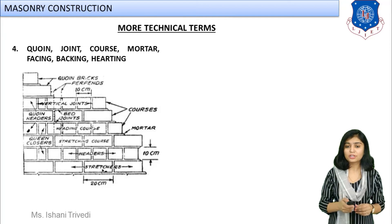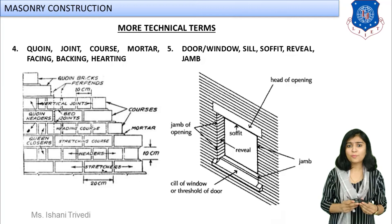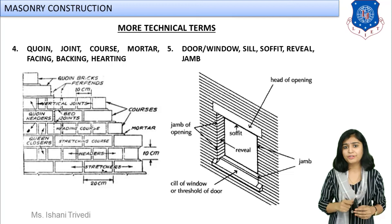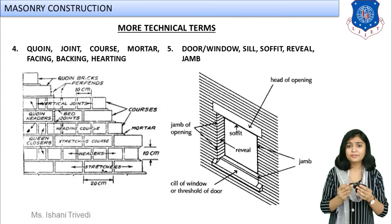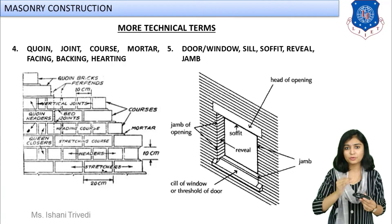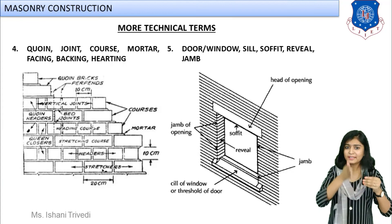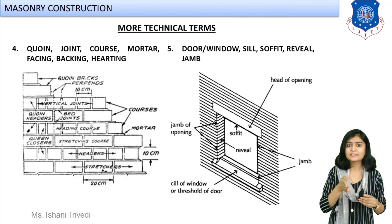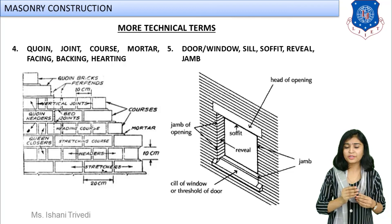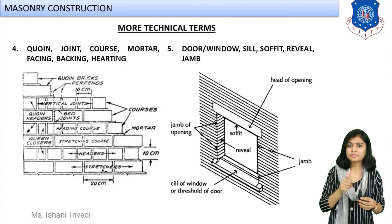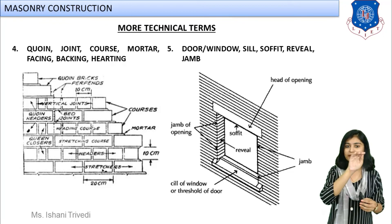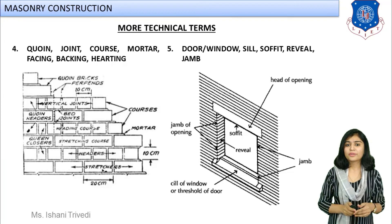Now moving to technical terms related to vertical openings — doors and windows. For a window: the point where the window starts above the floor level is your sill level, and a slab is provided there to support the opening. The vertical part of your window or door is known as jambs, and the vertical part exposed to the atmosphere is known as reveals. We have sill, jambs, reveals, and lintel — which is provided at the top level above the opening.